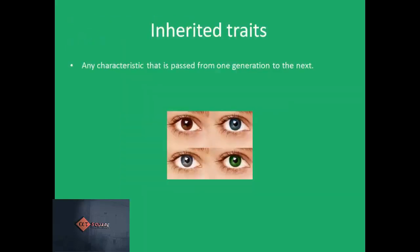All the examples we have seen are passed from one generation to the next, or are heritable. Such traits — like eye color, skin color, tongue rolling, height, etc. — are called inherited traits.